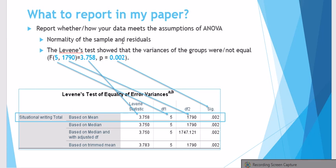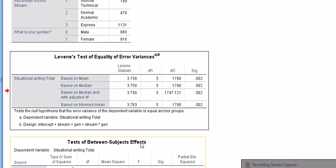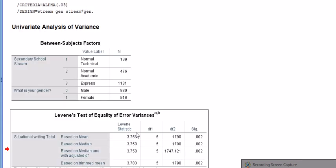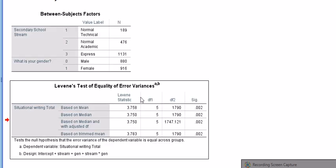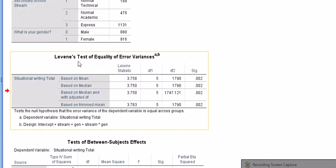What to report exactly? I recommend that you report first of all the normality of the sample and the residuals. I have covered these in some videos before and I will provide links to those videos in the comment section for this video.